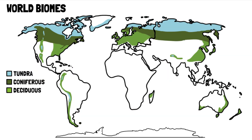Deciduous forests grow between the equator and the poles. Some of Earth's major deciduous forests are found in the eastern United States, Europe, and China.